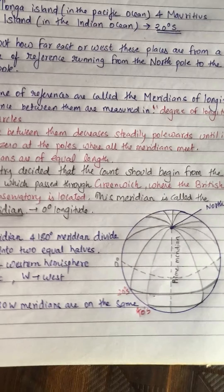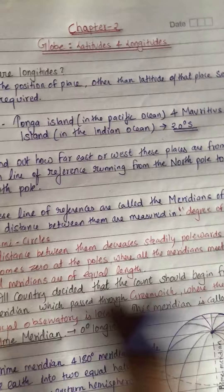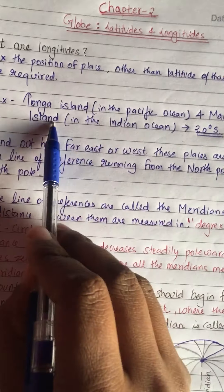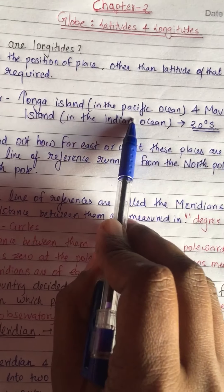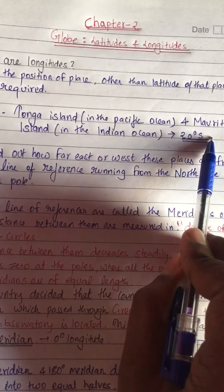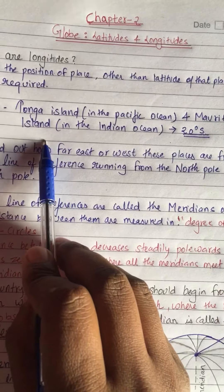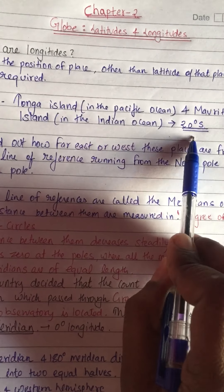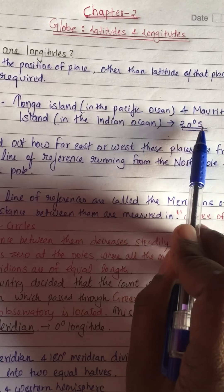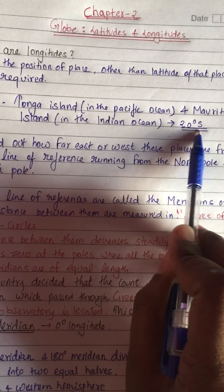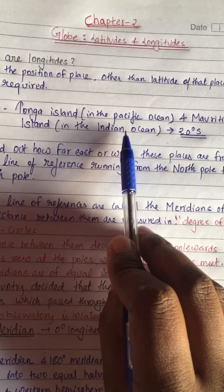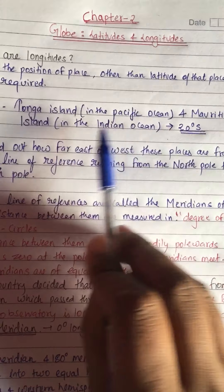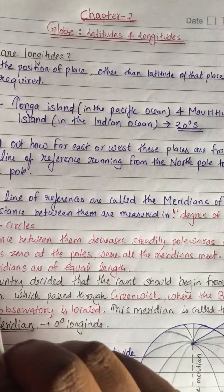In the NCERT, two examples are given. The first is Tonga Island in the Pacific Ocean and Mauritius Island. These are two islands located at 20 degrees south — meaning the latitude is the same. So how will we distinguish which island is Mauritius and which is Tonga Island?